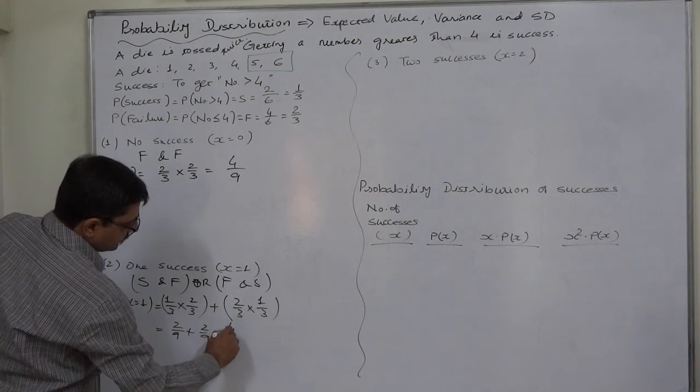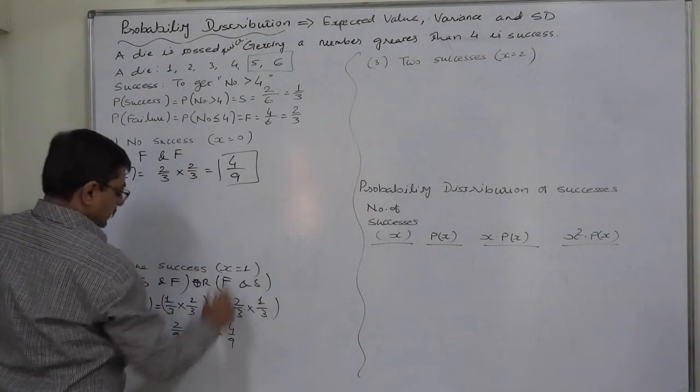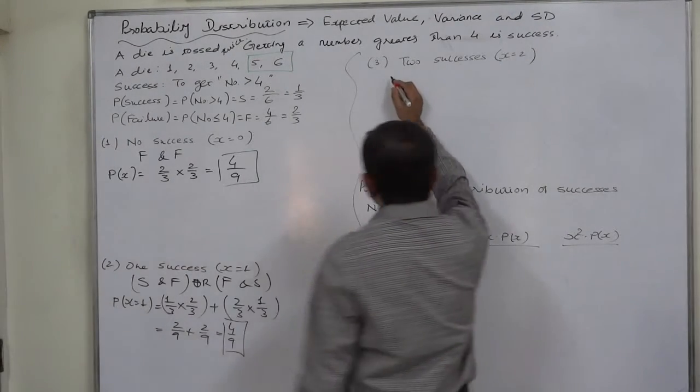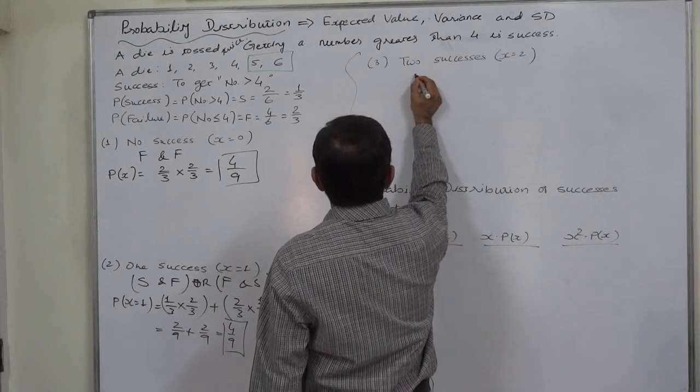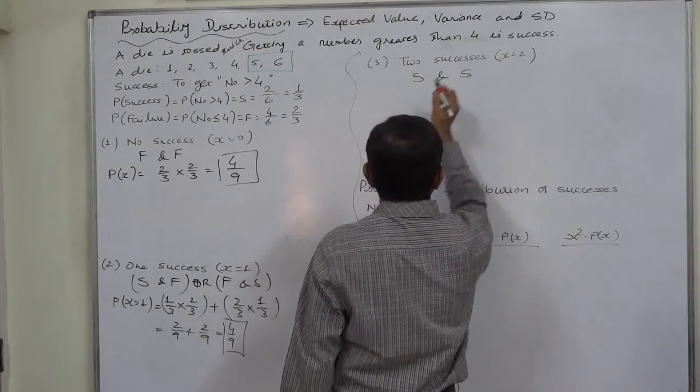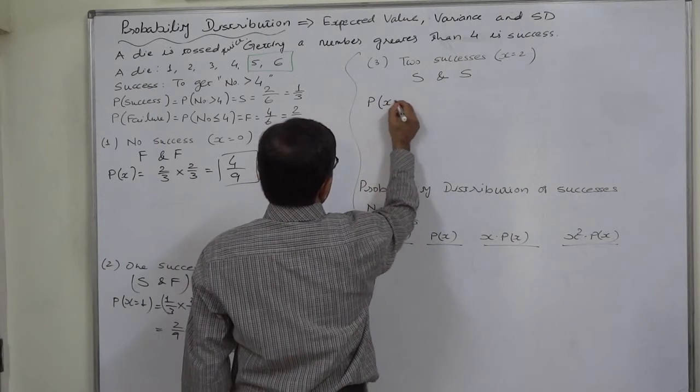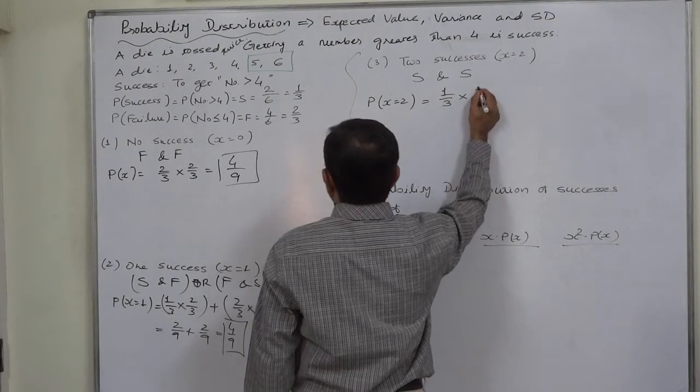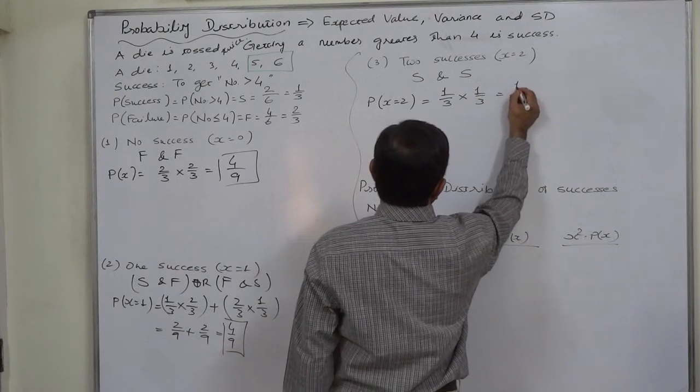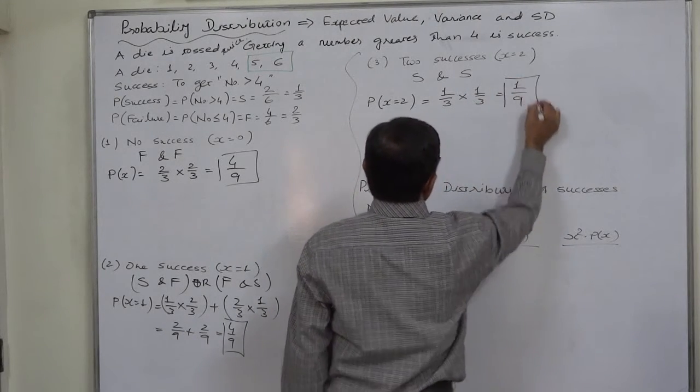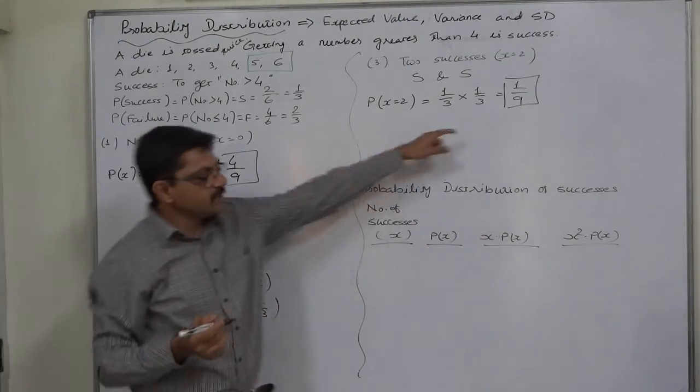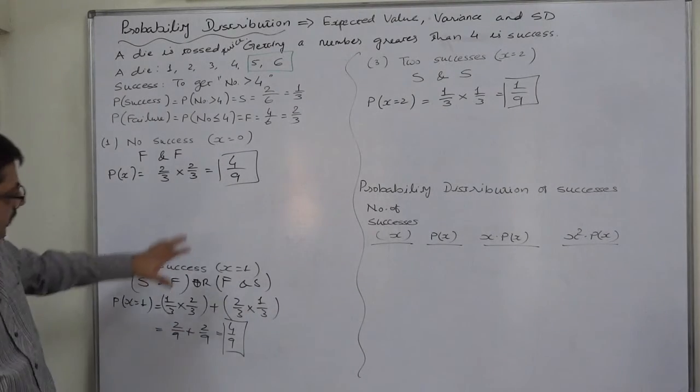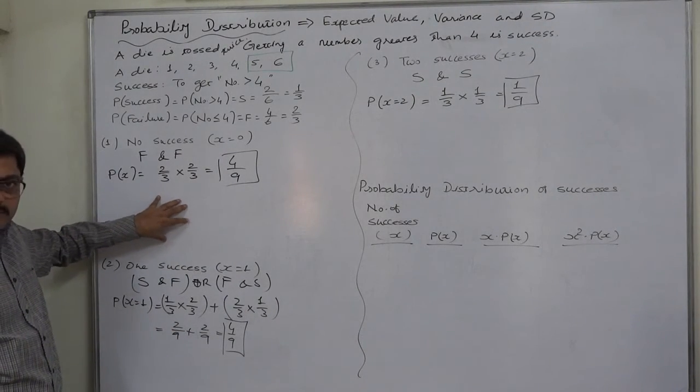And success in both the trials or both the tosses: success in first trial and success in second. So probability is success in first trial and success in second, so it is 1 by 9. So it is 1 by 9, 4 by 9 plus 4 by 9 plus 1 by 9, it comes to 9 by 9 or 1, because all these three are mutually exclusive and possible outcomes of the experiment.